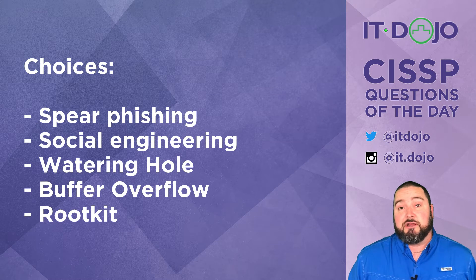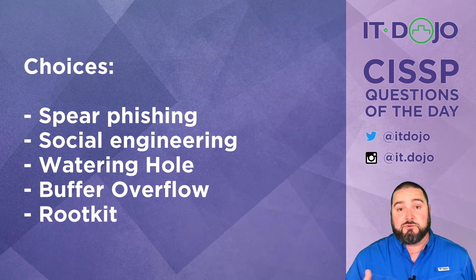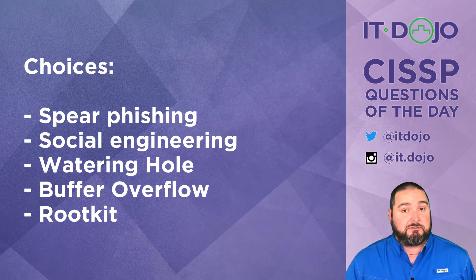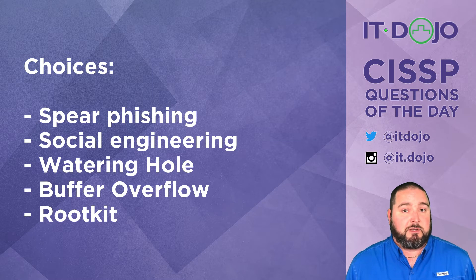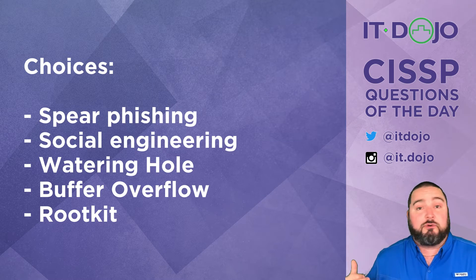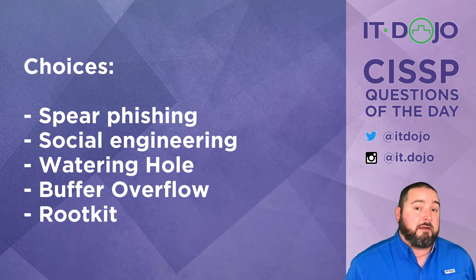Choice number two was social engineering — nope, this wasn't social engineering. This was an instance where people in your shop visited a website and their systems got infected. Nobody social engineered them to do this; it just happened because they visited a website. Choice number three is the one we're looking for: this is a watering hole attack.